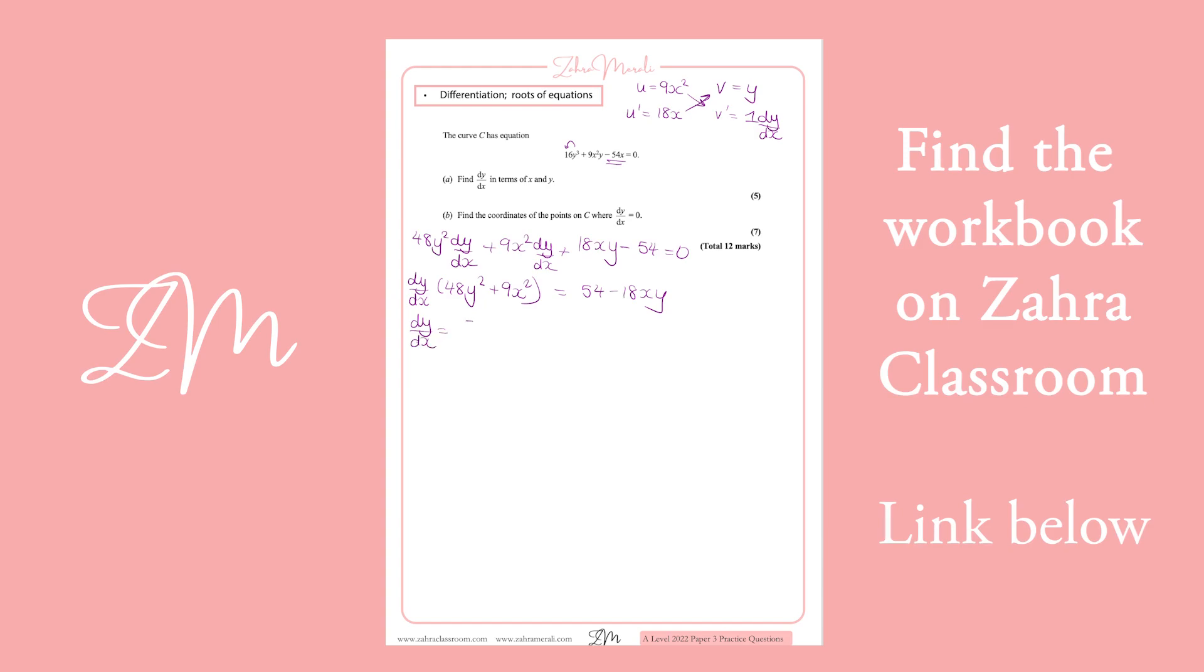So dy/dx = (54 - 18xy)/(48y² + 9x²). Everything divided by 3, so we get (18 - 6xy)/(16y² + 3x²), and that will be its simplest form.